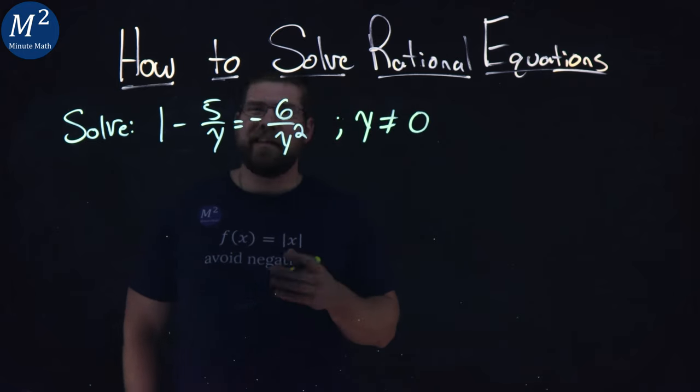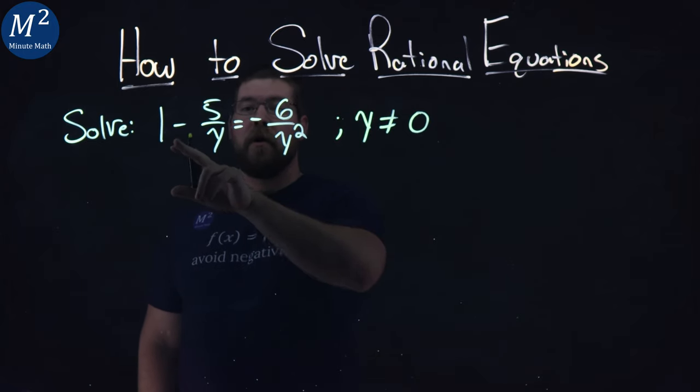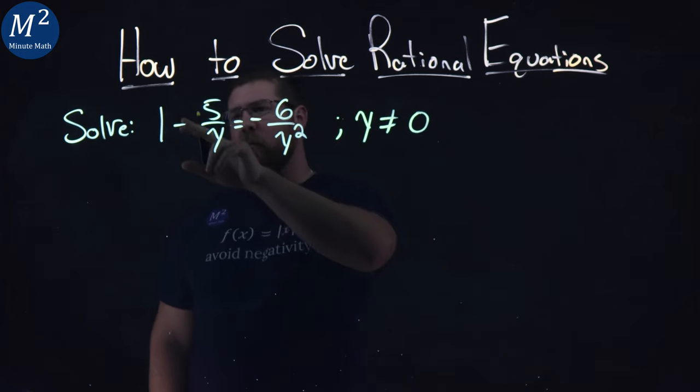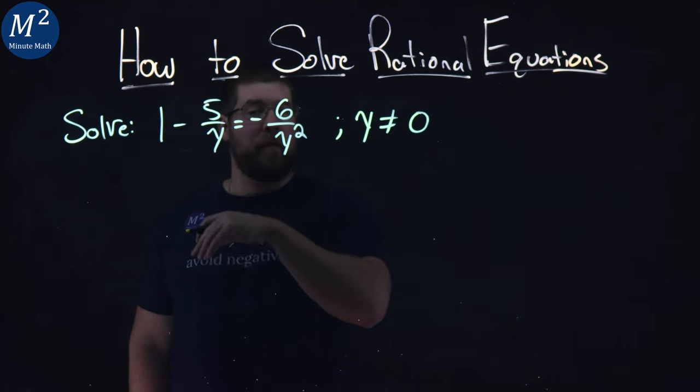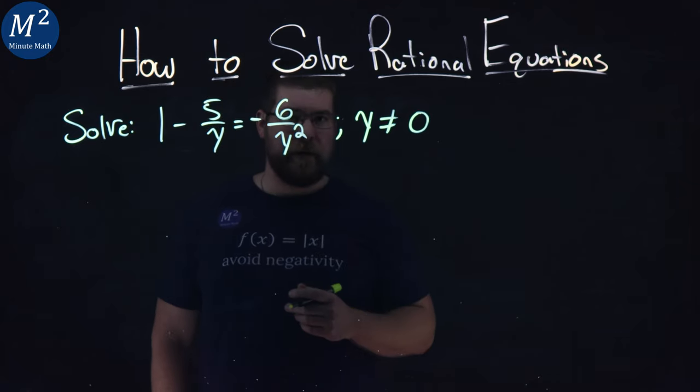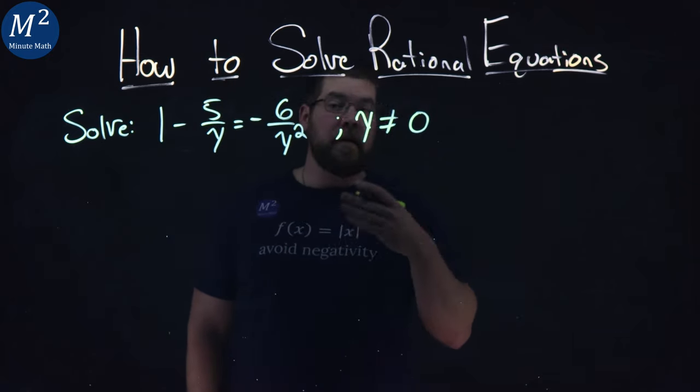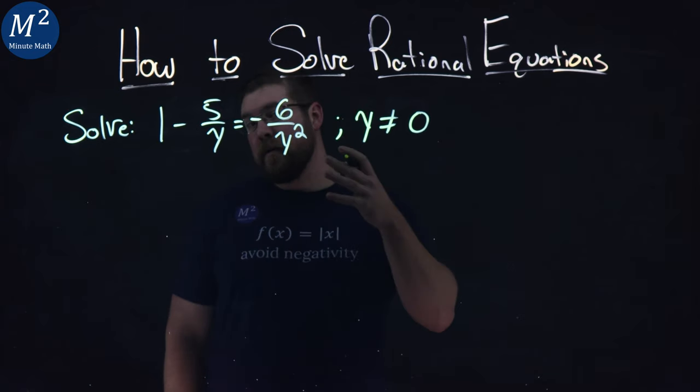From there, I want to find the least common denominator across all parts here. Now 1 over 1, don't worry about that, but the y and y squared, well, that gives us the least common denominator of y squared.